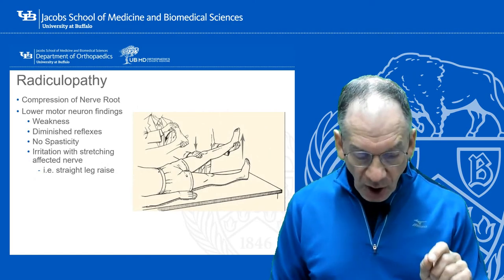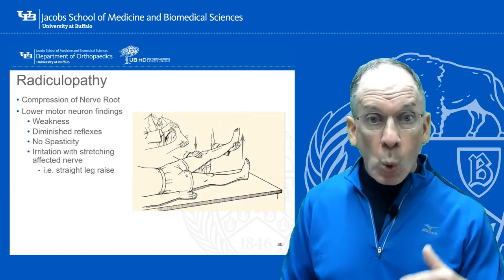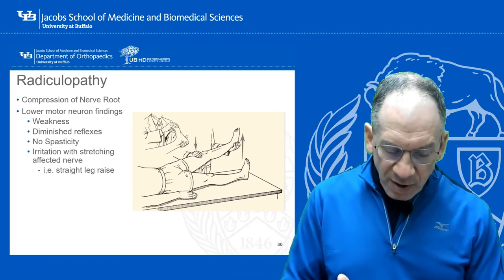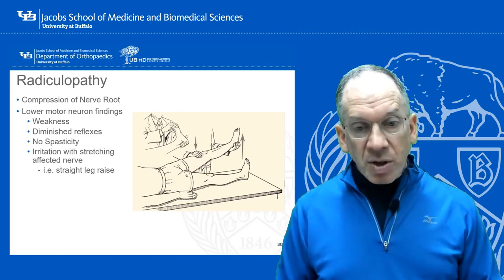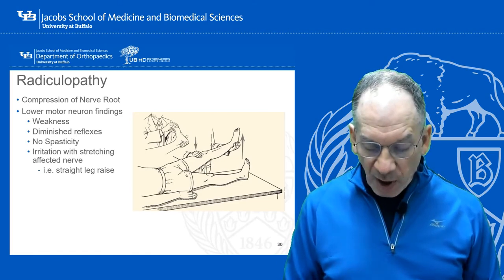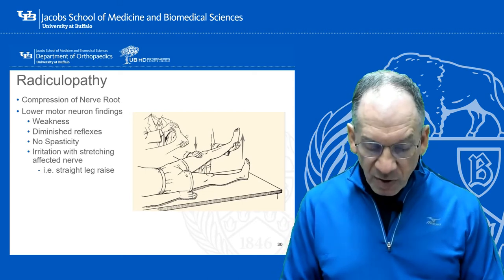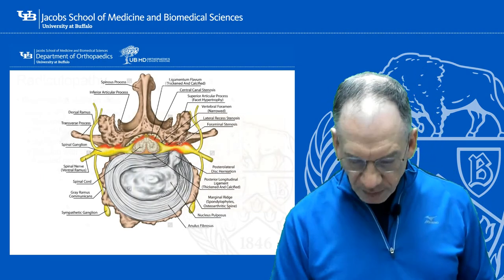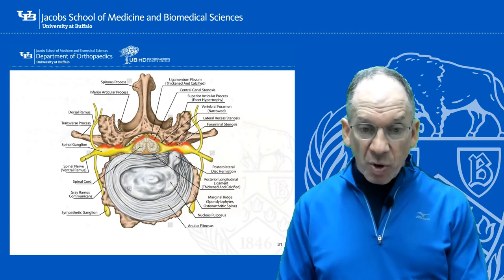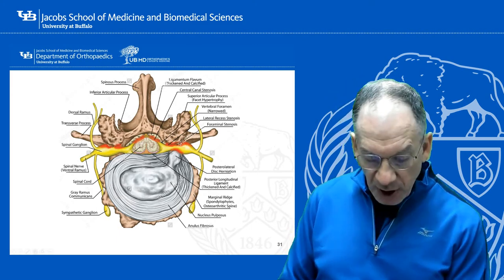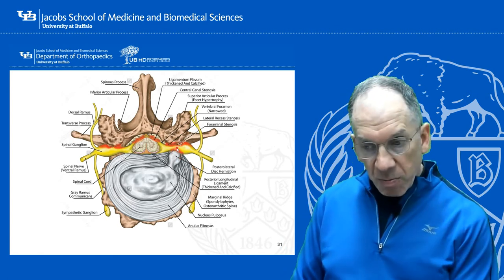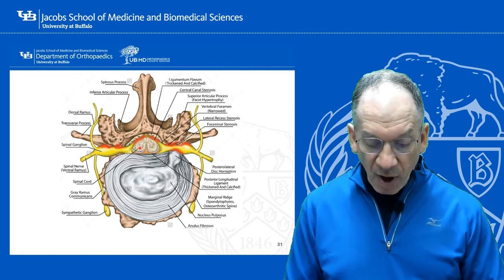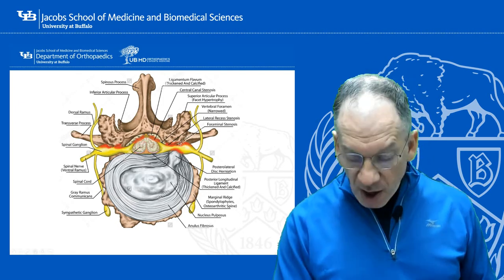Radiculopathy is a nerve root compression — lower motor neuron findings. Key features: weakness, diminished reflexes, no spasticity, and irritation when you stretch the affected nerve — demonstrated by a straight leg raise in someone with a herniated lumbar disc. A cross-sectional anatomy image shows a tear in the annulus fibrosis with the nucleus pulposus protruding — in this case pressing on a nerve root causing a radicular lower motor neuron picture. If pressing on the cord it would cause an upper motor neuron picture; if pressing on the cauda equina in the lower lumbar spine, it could cause cauda equina syndrome.